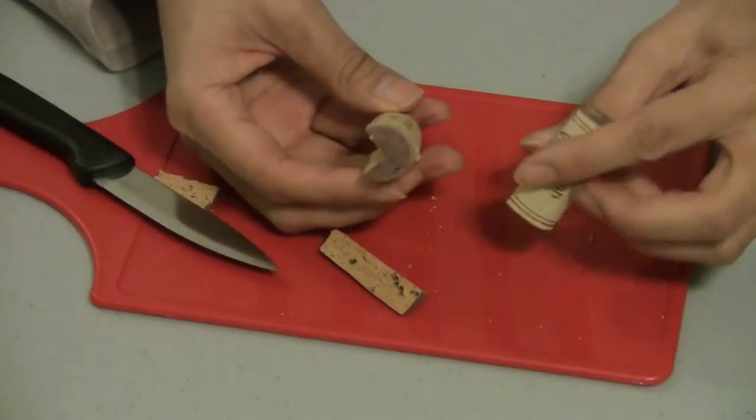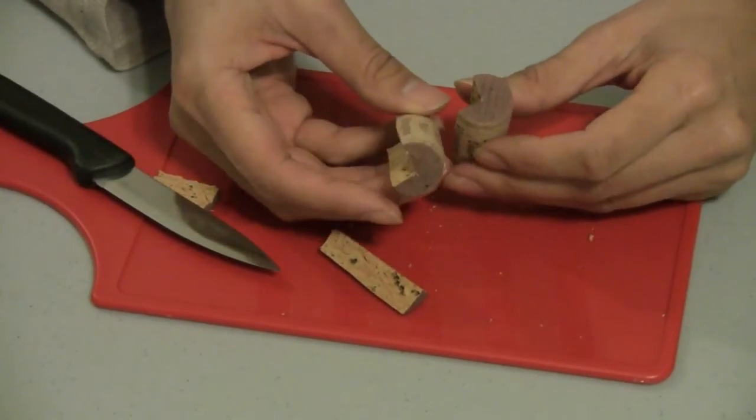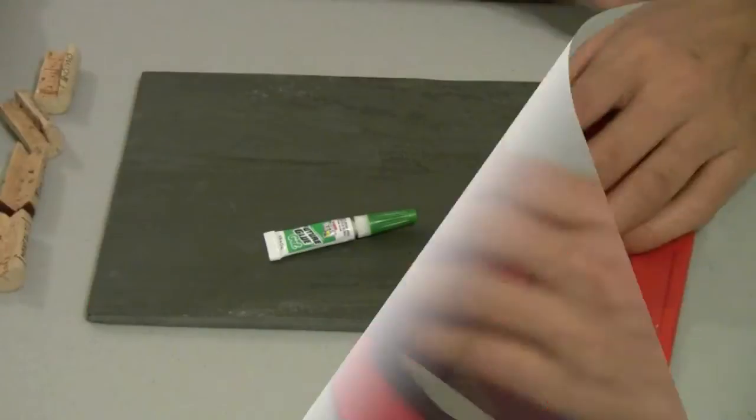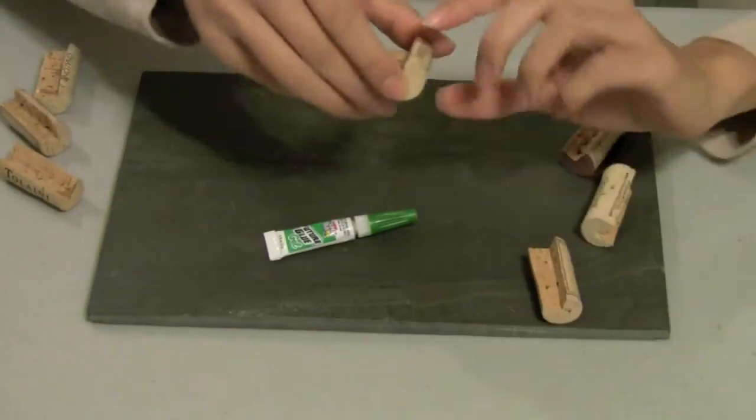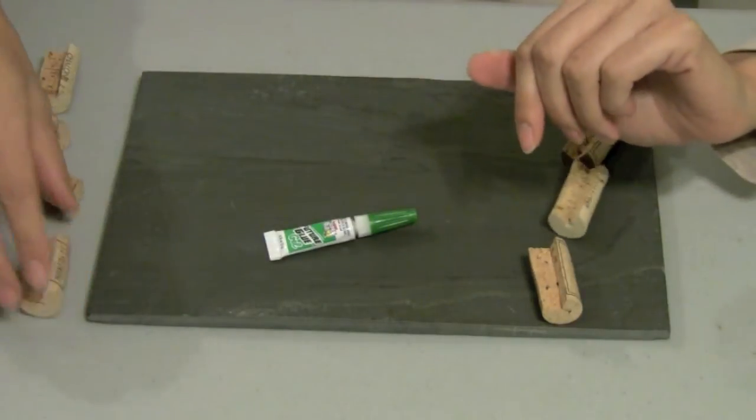So we've cut a quarter out of our wine corks. We're going to continue cutting our wine corks. Welcome back. We have finished cutting all of our corks. We've cut a quarter of each cork lengthwise.